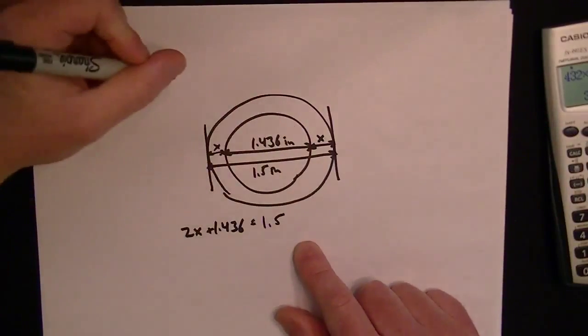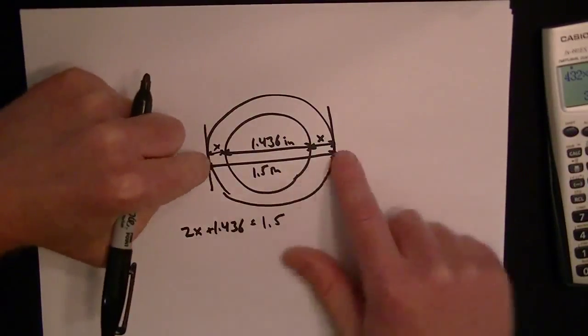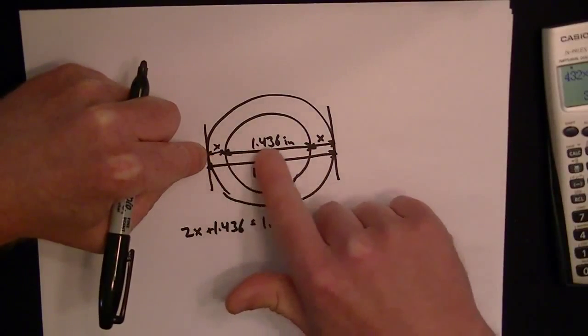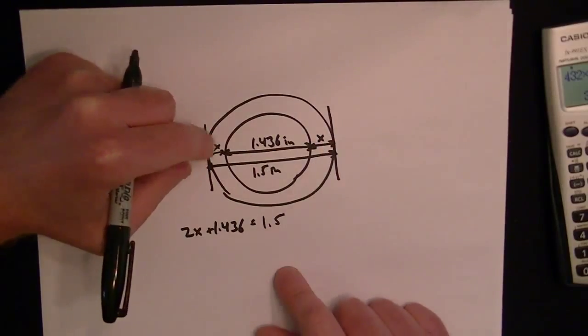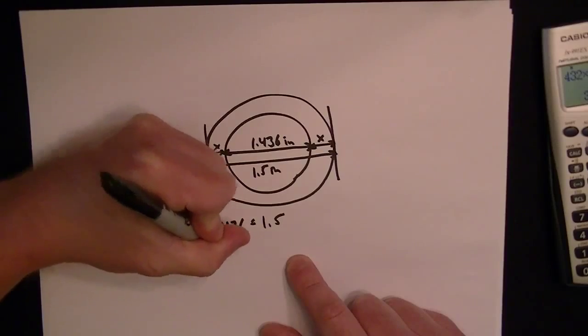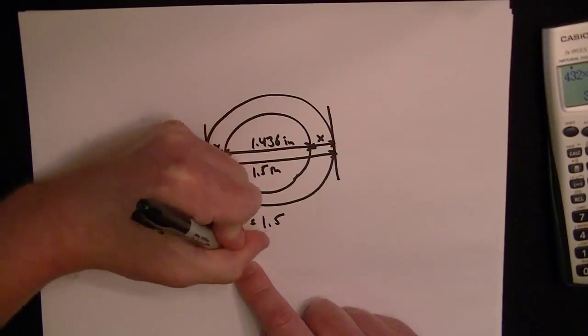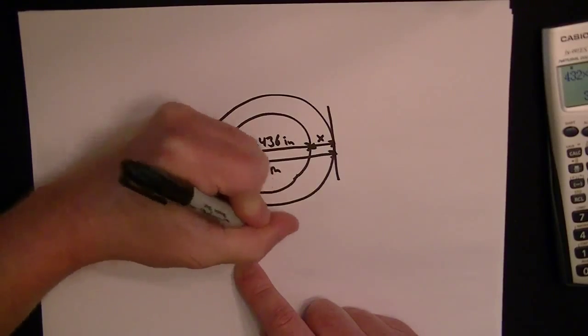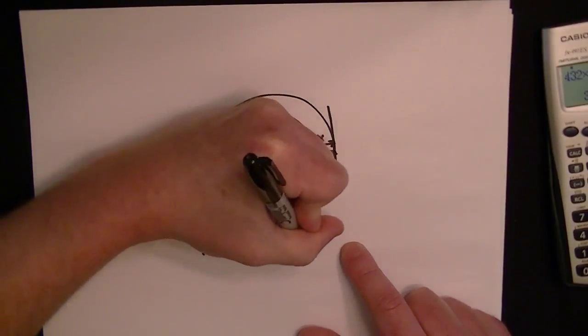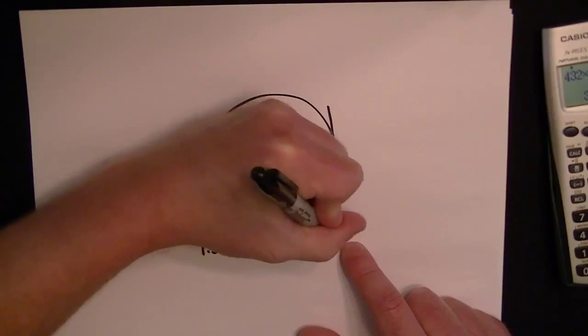So let's do it. 1.5, right? Because the whole thing is 1.5 across and that's made up of an X, the middle, and another X. So if we want to know what X is, we can solve for X. So we would do 1.5 minus 1.436 on both sides. So I'll just write it out here.